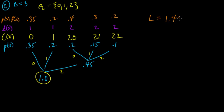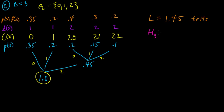The expected codeword length is 1.45. Before, when we had b equals two, we called the units bits. The corresponding unit for b equals three is called trits — for three. The entropy now has to be computed as the base-three entropy, since b equals three.